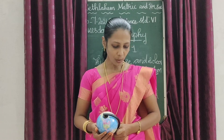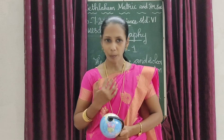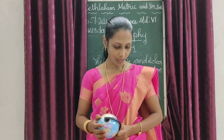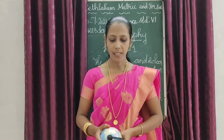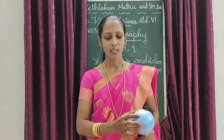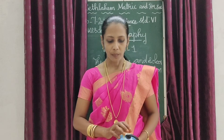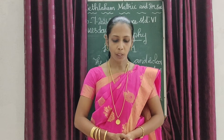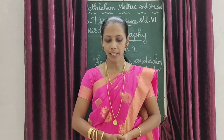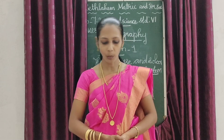Earth is the only planet known to support life, because of the presence of land, air, and water. There are seven continents on this land. The polar diameter of the earth is 12,714 km and the equatorial diameter is 12,756 km.